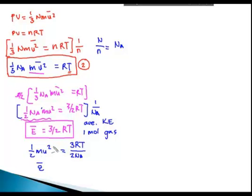We are starting to forget the bar there. This bar is very important because this represents the average. This is the kinetic energy. And this thing here, R over Na, is simply the Boltzmann's constant, Kb. It's R over Na.